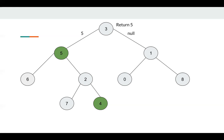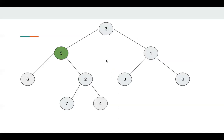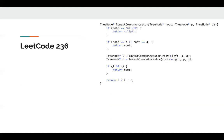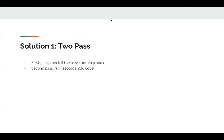This is the solution for LeetCode 236, but it does not work for this problem since p and q do not always exist. In this example, let's assume p is 5 and q is 10 — q is not in the tree. If we use the LeetCode 236 solution, node 5 returns node 5 to node 3, and node 1 returns null to node 3, so node 3 returns node 5. But we know we should return null here. So we cannot reuse that solution.